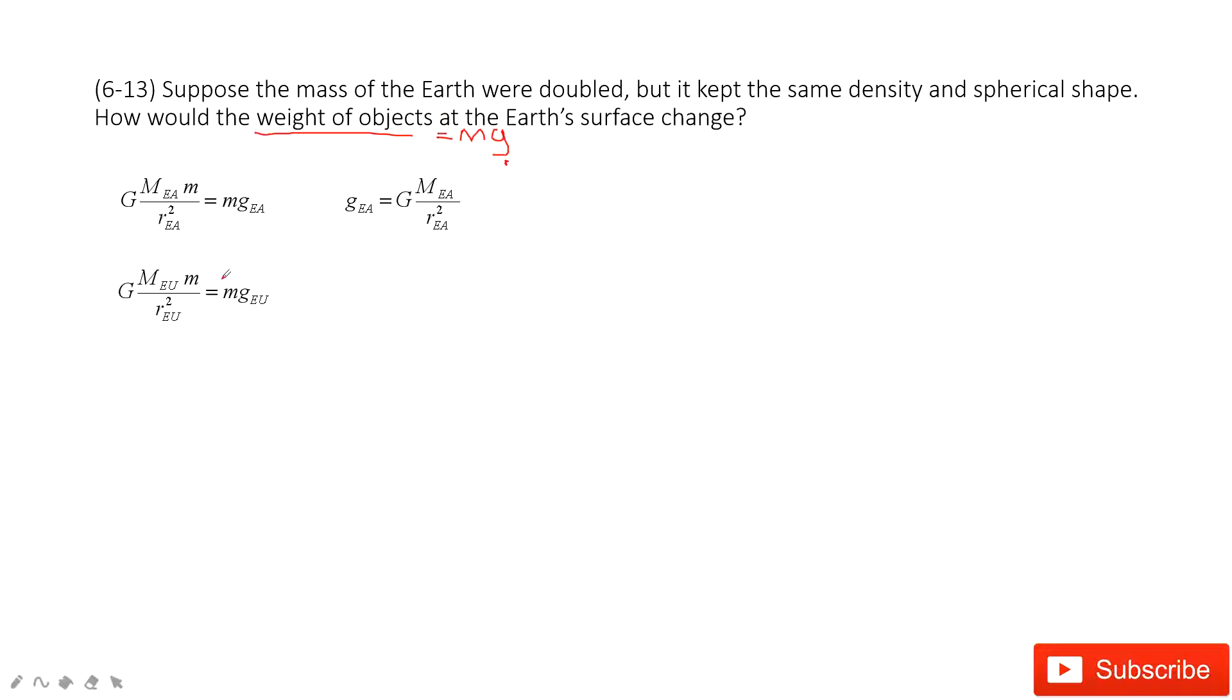And then when the Earth is doubled, we consider its mass is Eu. And the radius becomes rEu. It also changes because the density is the same. So it looks like this way. And then we can find the ratio for them. So the new g, gEu divided by gEa, equals this function.